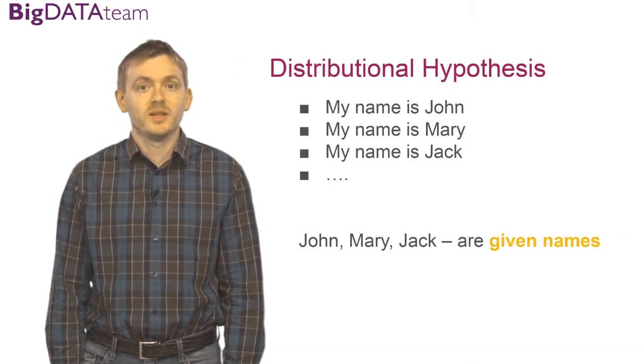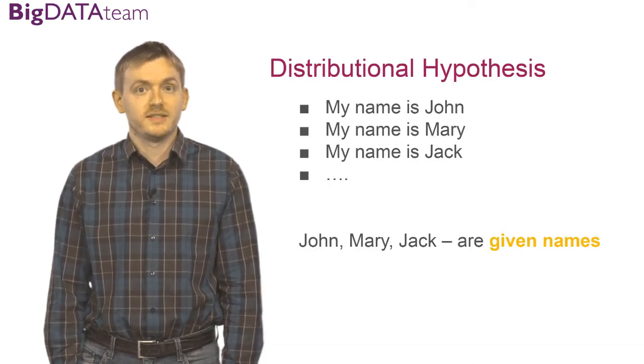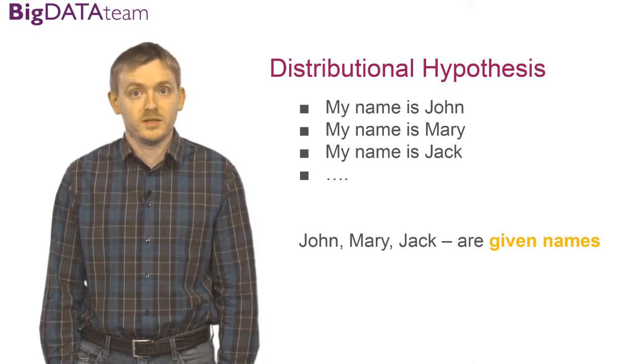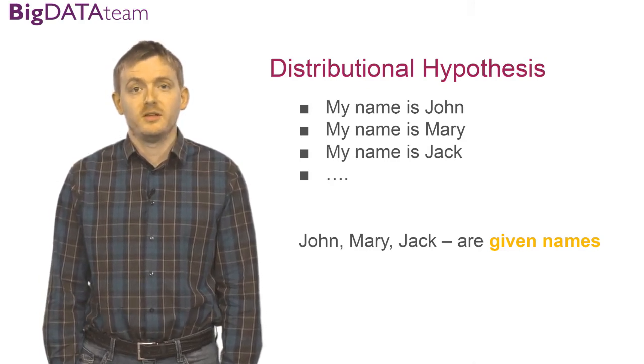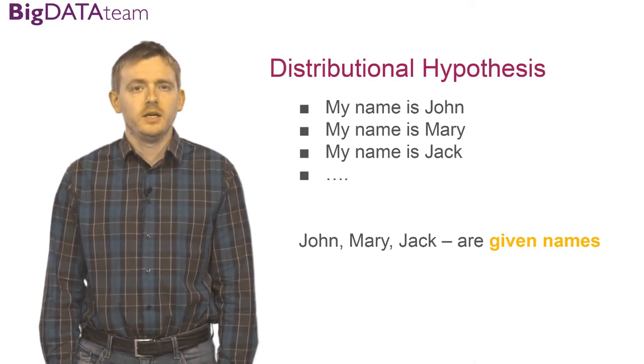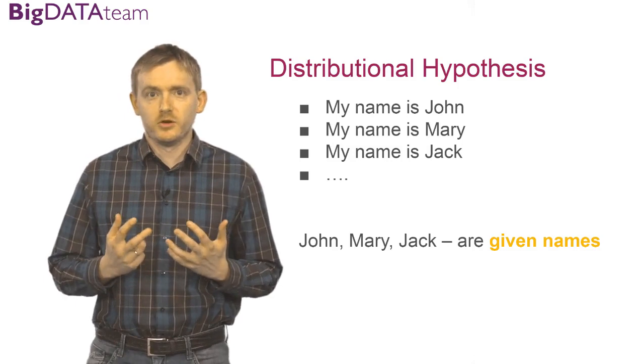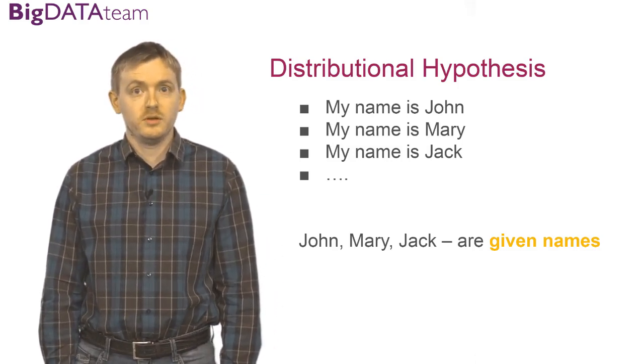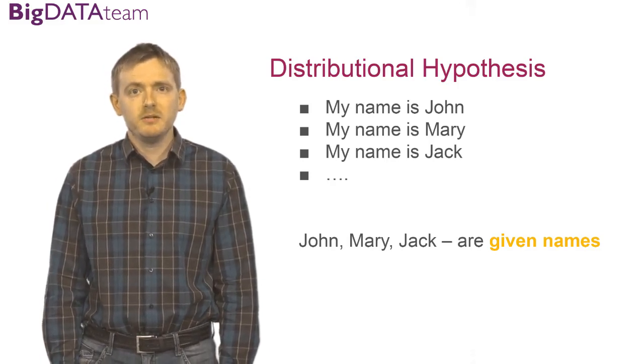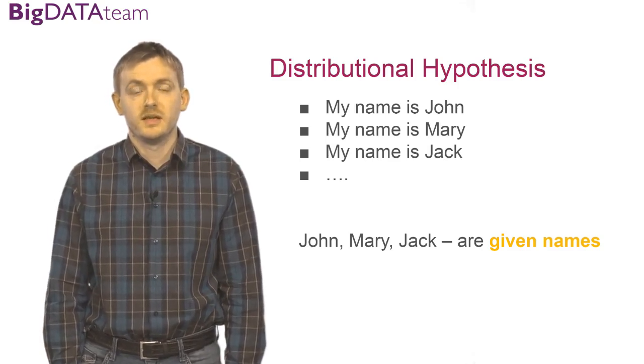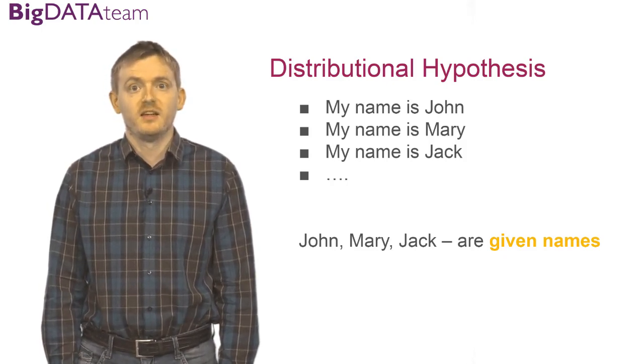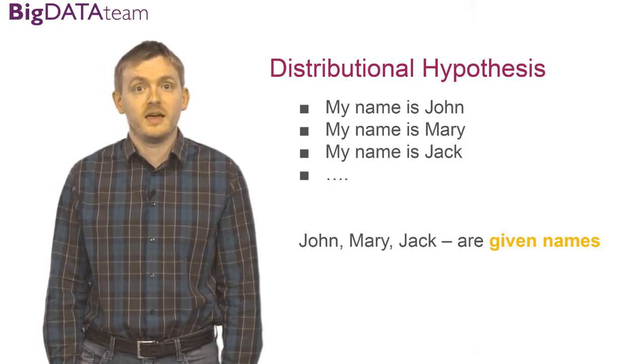Here is a simple example. Consider three sentences which you can easily find in a lot of documents: my name is John, my name is Mary, and my name is Jack. It is very easy to infer from these sentences that John, Mary, and Jack are given names. And even if you find in the same context a new word, you may suppose with high probability that the new word is also a given name.